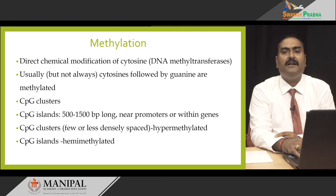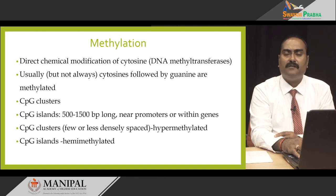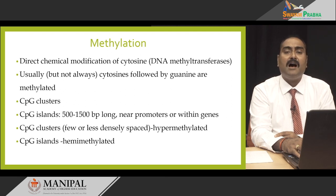CpG islands generally contain 500 to 1500 base pairs and are located near or inside the promoters or within genes. CpG clusters, which contain fewer or less densely packed CpGs, are hypermethylated, and CpG islands are hemimethylated or less methylated — this is the general rule of thumb. One more factor to keep in mind is that CpG islands located near or within the promoters are largely unmethylated; that means there is no methylation present in the CpG islands within the promoter regions.